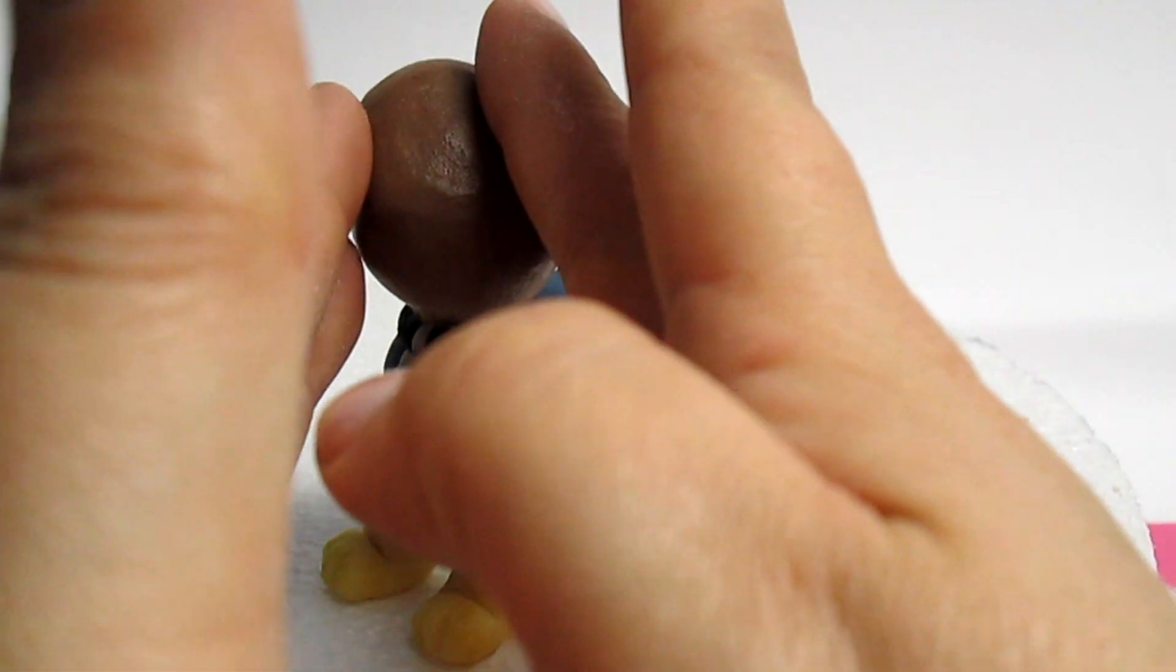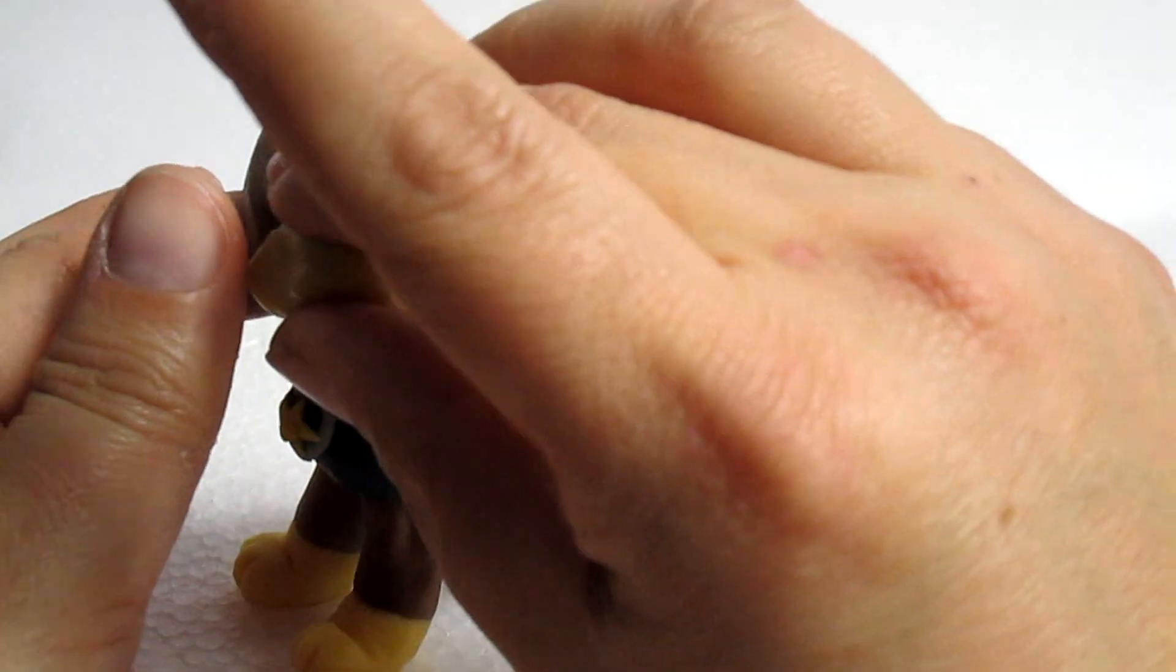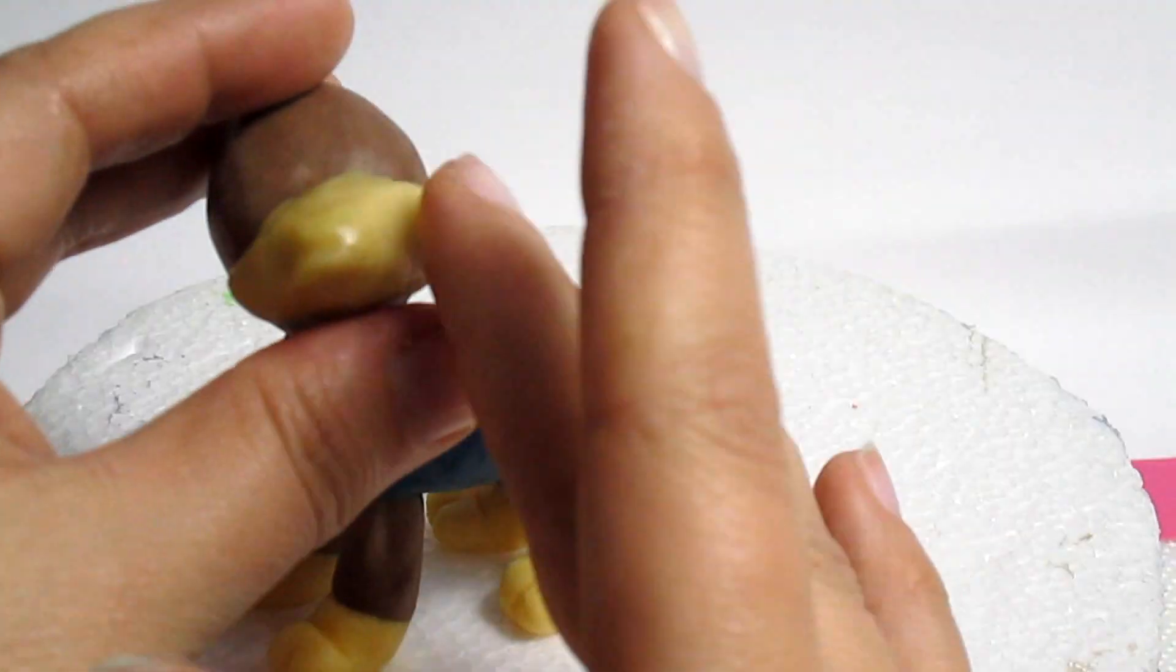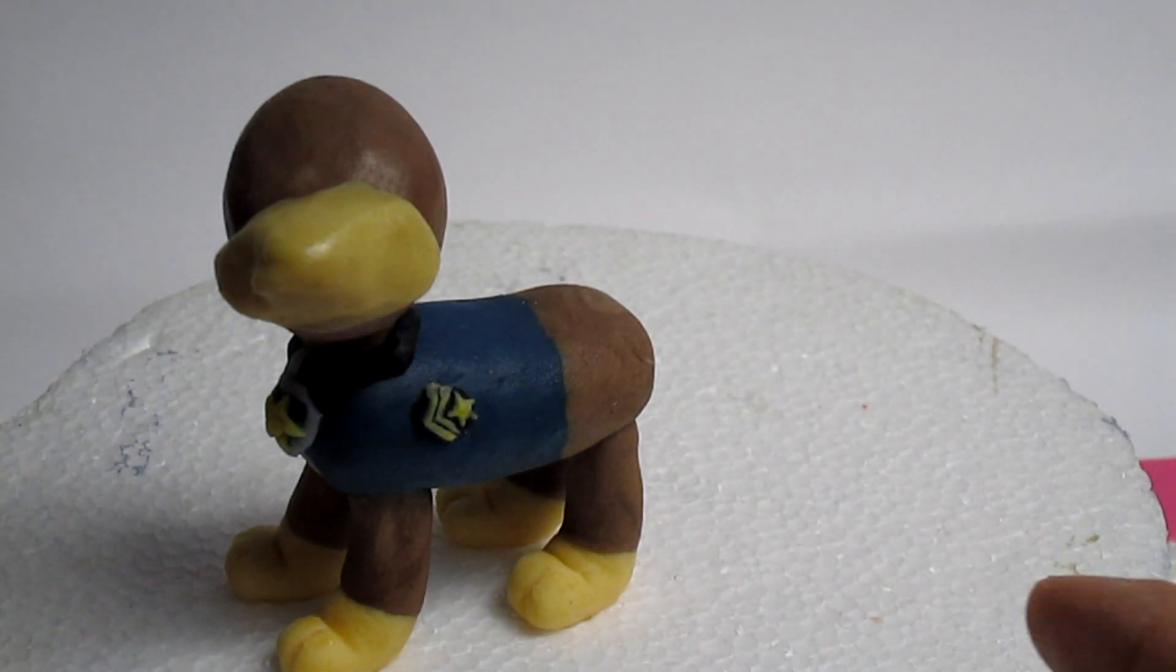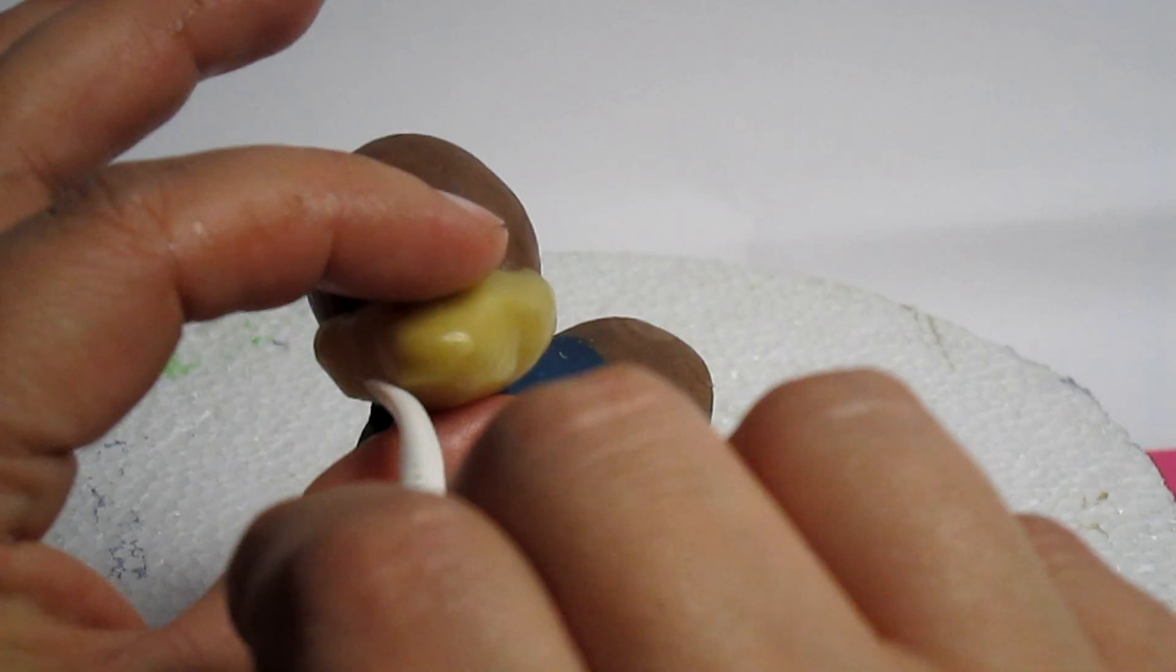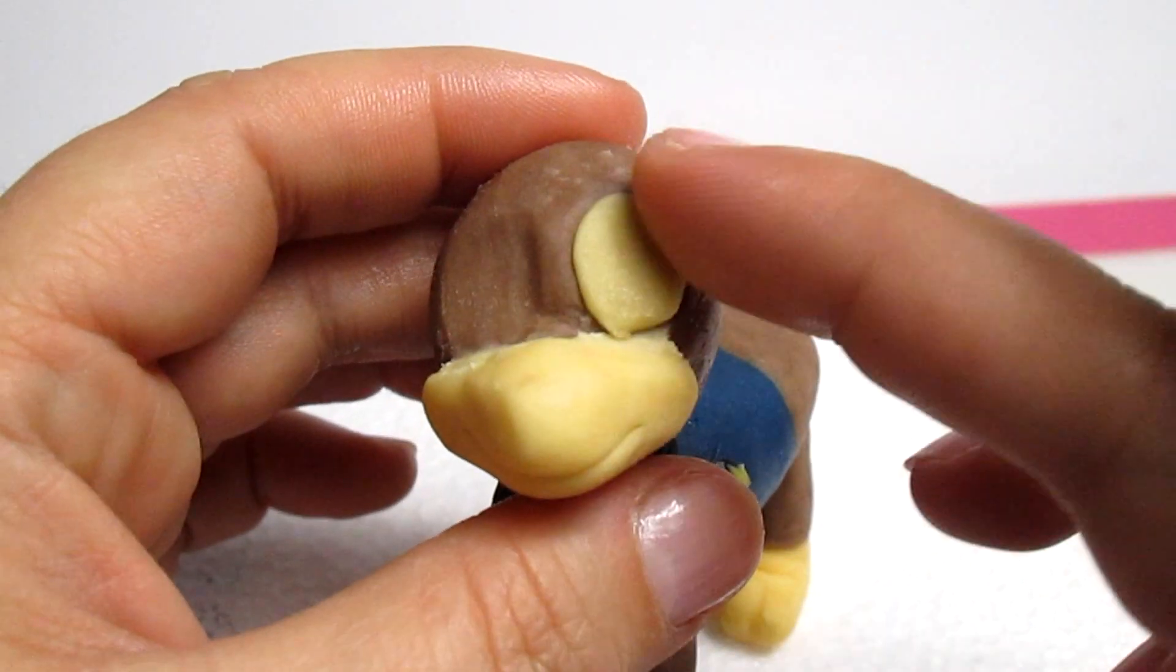To make the mouth, I'm using the same fondant color as the face. And what I do is with my pinky, I roll just the side of it so that I get a bigger mouth in the middle. Then I draw the mouth and place two ovals where the eyes are going to be.